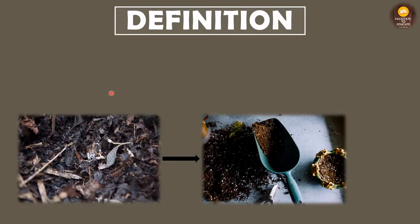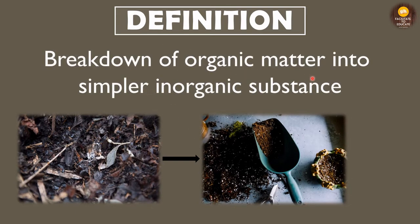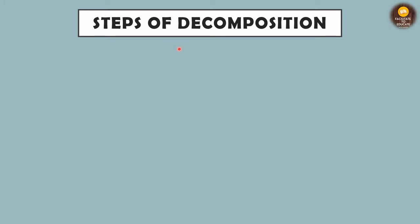First of all, we'll look at the definition of decomposition. The definition says: the breakdown of organic matter into simpler inorganic substances. So basically we are converting complex organic matter into simpler inorganic substances, and this process of breakdown is known as decomposition.